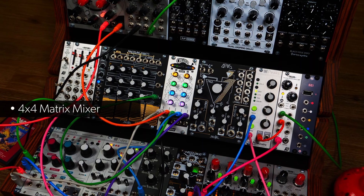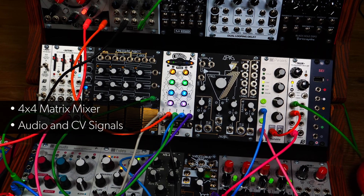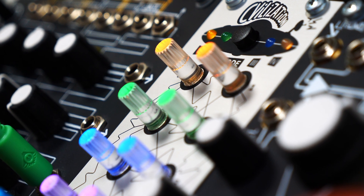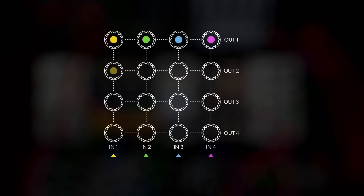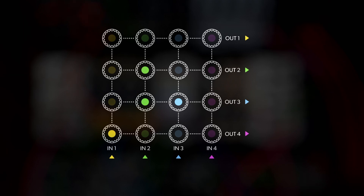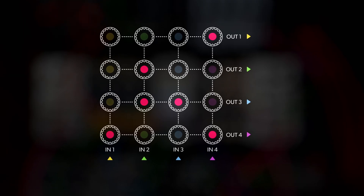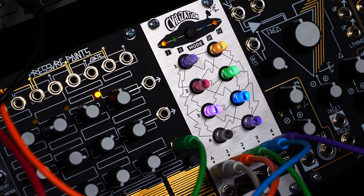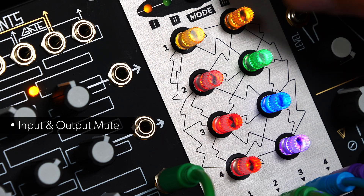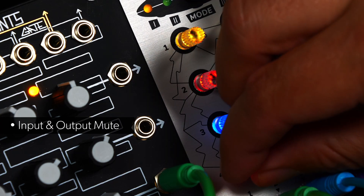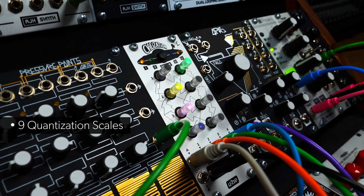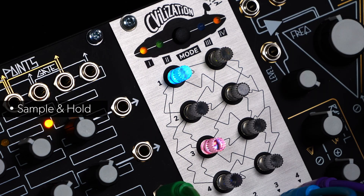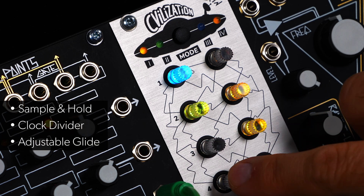Mode One turns Civilization into a 4x4 matrix mixer for audio and CV signals. Here are some key features: four inputs can be freely routed to four outputs with adjustable levels and normal or inverted polarity, giving you up to four different independent mixes. Each input and output can also be muted. Nine quantization scales are included so you can always hit the right note. Mode One also features sample and hold with clock divider, as well as adjustable glide for each output.